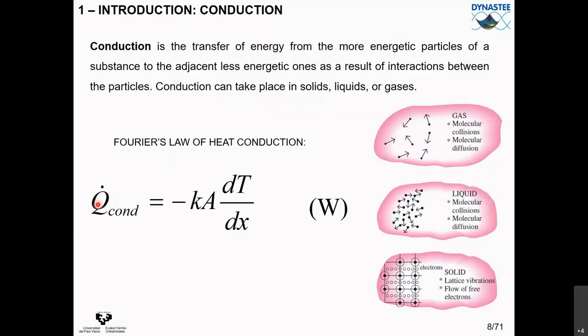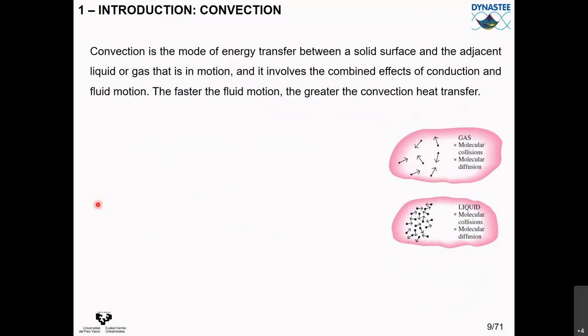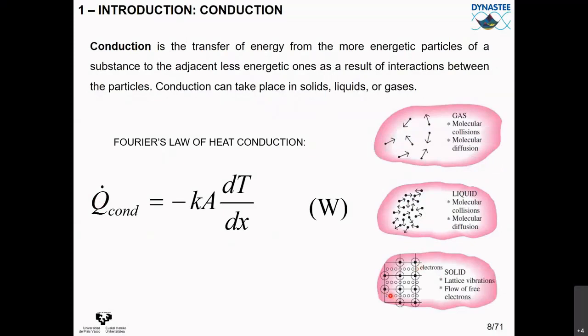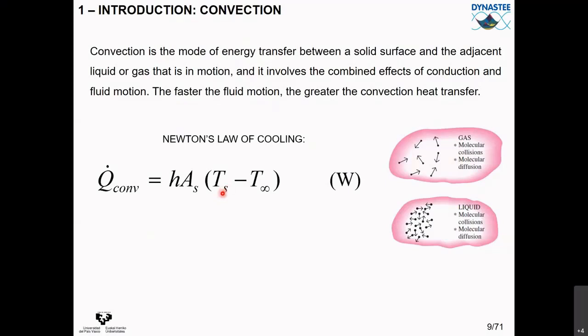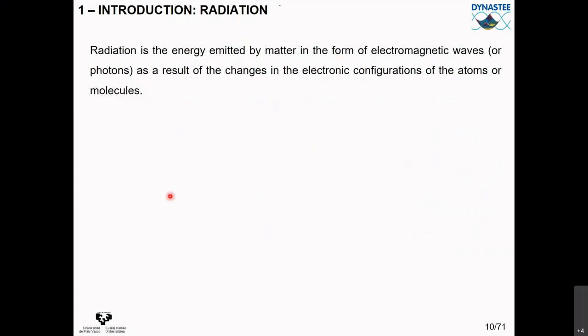We also have convection — another heat transfer phenomenon occurring from the surface of a solid to a fluid. In the building envelope, this is typically the surface temperature of a wall against the air temperature towards the indoors or outdoors. We have convection coefficients there. Then we have radiation: energy transmitted by matter in the form of electromagnetic waves or photons as a result of changes in the electronic configuration of atoms and molecules. Convection coefficients characterize this exchange at surfaces.